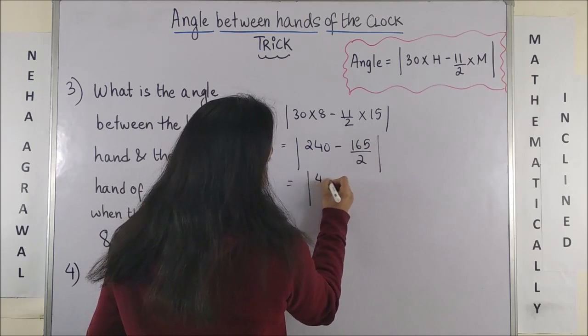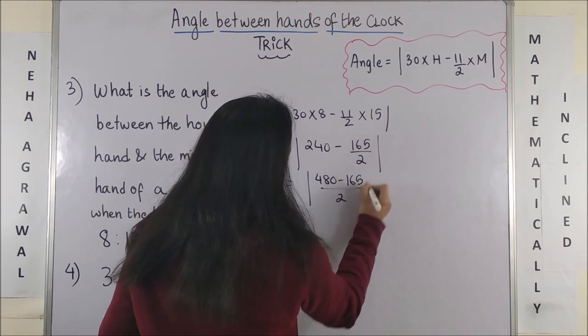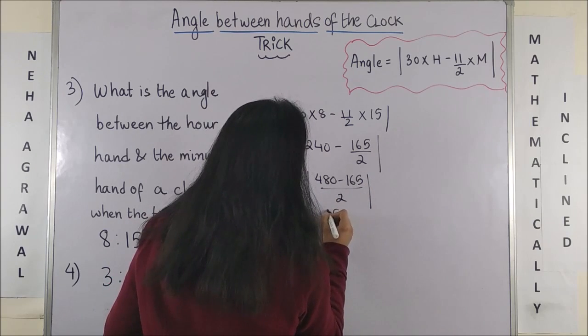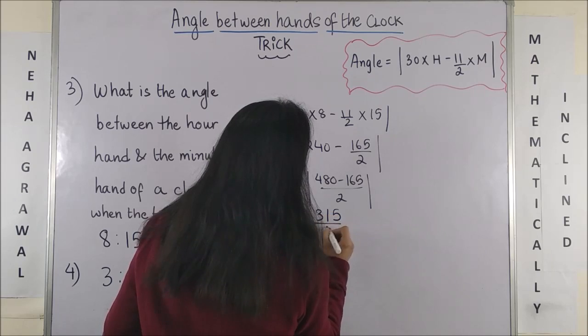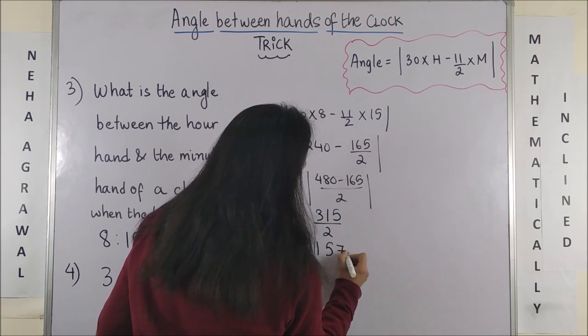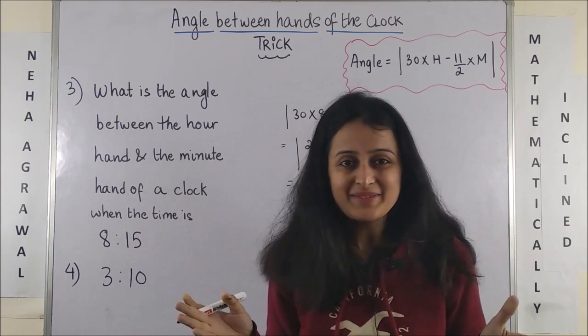This makes it 480 minus 165 by 2, which is obviously, which will be 315 by 2, which is 157.5 degrees.